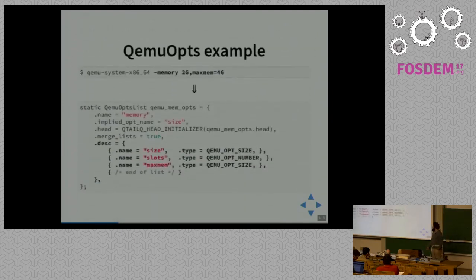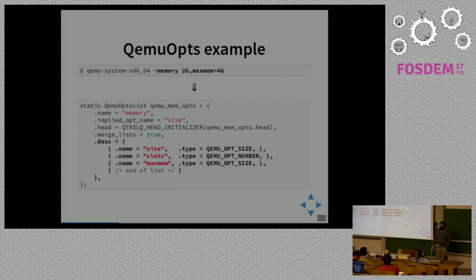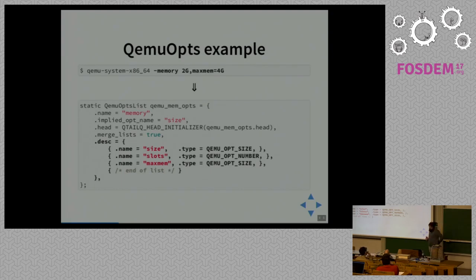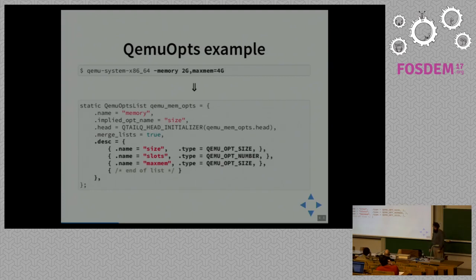Let's see how it looks. This is a simple example of QMU Ops in action. We can see a real QEMU command line and the declarations in the code that make it possible. The most important part is the desc section — it describes the options accepted by the dash-memory option. If something is unreadable, the slides are published on the FOSDEM website.